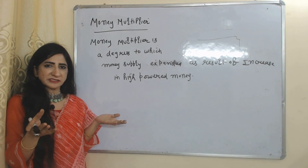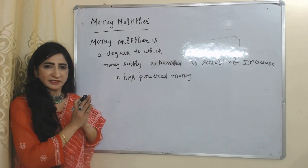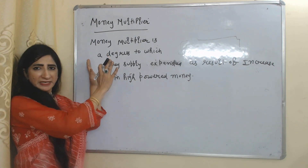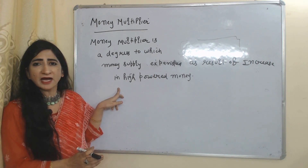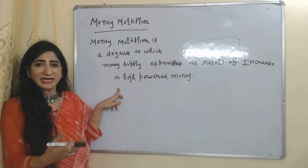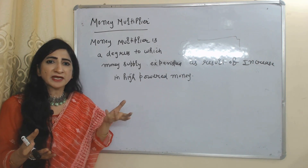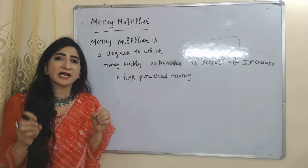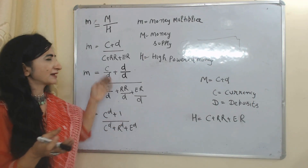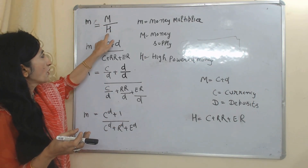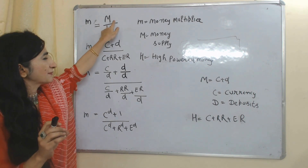Now we are going to talk about money multiplier. As we know, money supply increases when high powered money increases. The money multiplier is the degree to which money supply expands as a result of an increase in high powered money — it measures how much money supply increases due to an increase in high powered money. The formula of money multiplier is: small m equals M over H, where small m is the money multiplier, capital M is money supply, and H is high powered money.